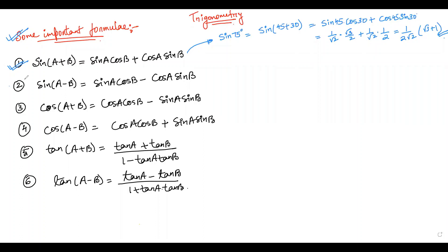Similarly, sin(A - B) = sin A cos B - cos A sin B. Also, cos(A + B) = cos A cos B - sin A sin B, and cos(A - B) = cos A cos B + sin A sin B. Similarly, tan(A + B) = (tan A + tan B)/(1 - tan A · tan B), and tan(A - B) = (tan A - tan B)/(1 + tan A · tan B).